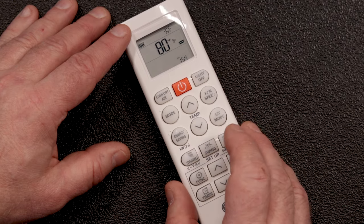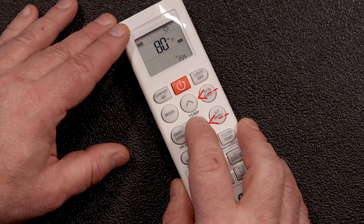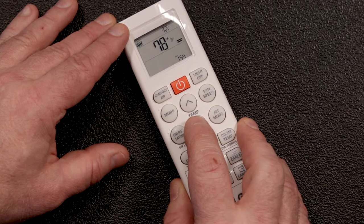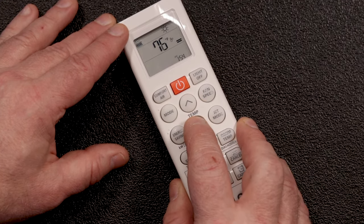Once you've selected the mode you want, use the up and down temperature arrows to adjust the temperature setting. This is the target temperature the system will maintain, and it's sensed at the ductless head itself.